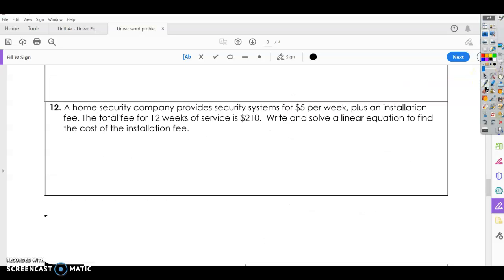One last example on point slope equation. A home security company provides security systems for $5 per week plus an installation fee. The total cost for 12 weeks of service is $210. Write and solve a linear equation to find the cost of the installation fee. So $5 per week, that's our rate of change. So $5 per week is our slope. We're going to do 12 weeks for $210.